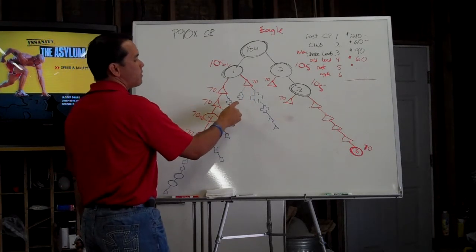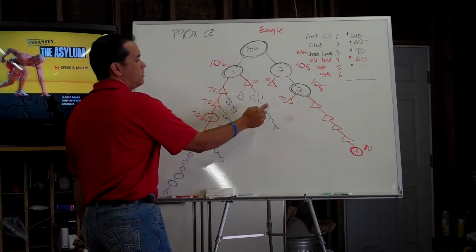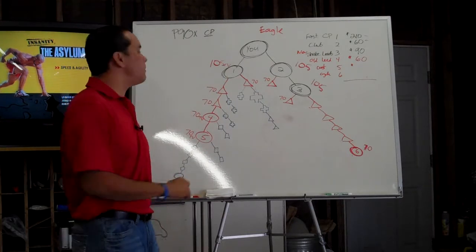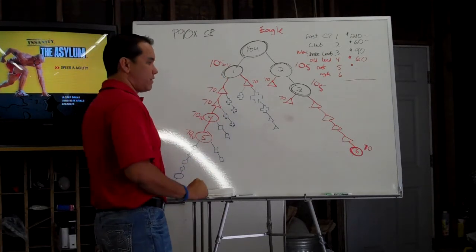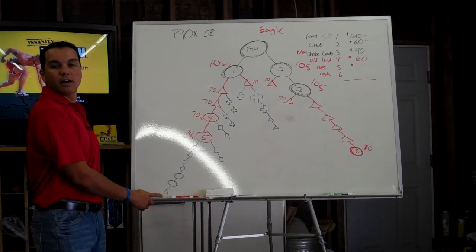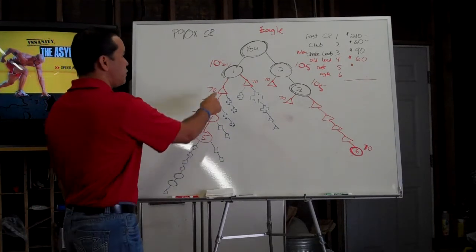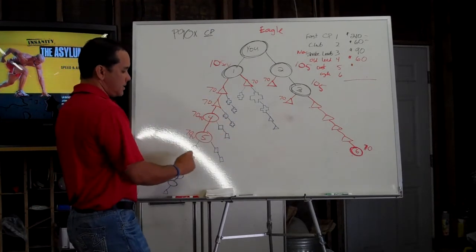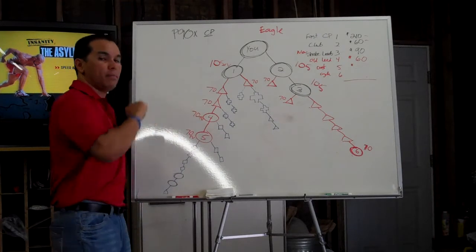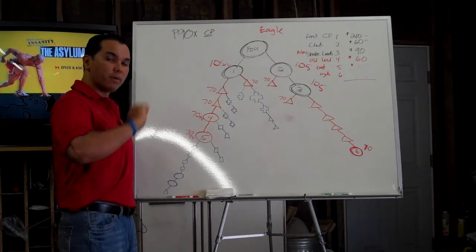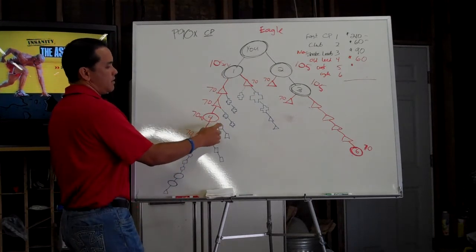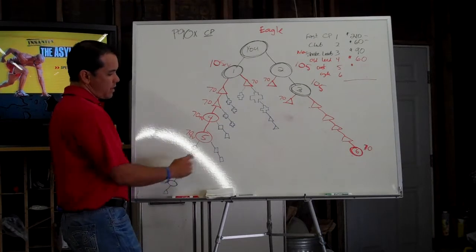The triangles who came in in month number two, they sponsored their three people which are crosses. The black circle who was the first month, he's gonna sponsor his second batch of three triangles. All the triangles are sponsoring X's. All the new circles that came in the second month, numbers four and five, they're gonna sponsor their first batch of three people so they can qualify for success club five.